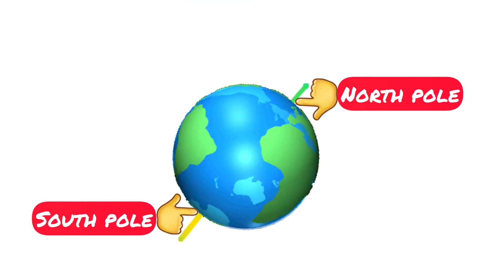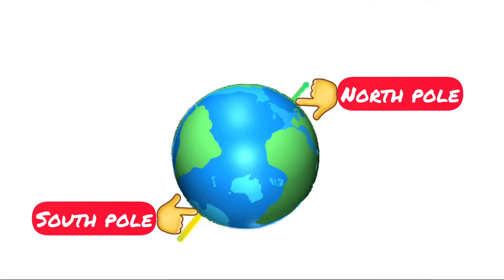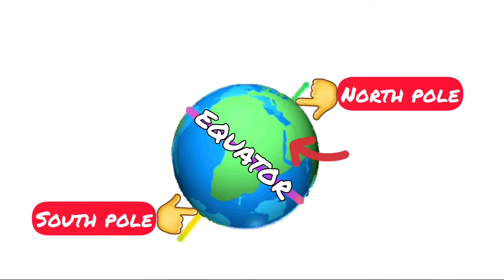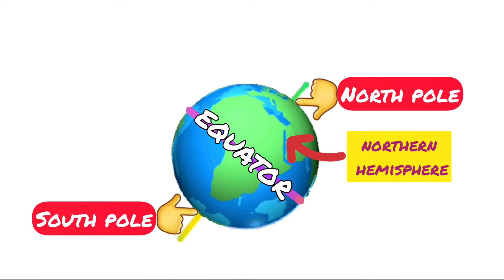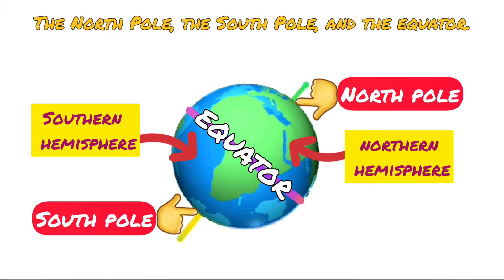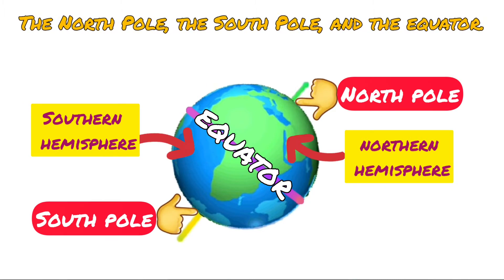Now let us divide the earth into two equal parts by drawing an imaginary line midway between the north pole and the south pole. This line circles the earth and we call it the equator, as it divides the earth into two equal parts or hemispheres. The part towards the north pole is called the northern hemisphere and the part towards the south pole is called the southern hemisphere. Hence we have the following references: the north pole, the south pole, and the equator.